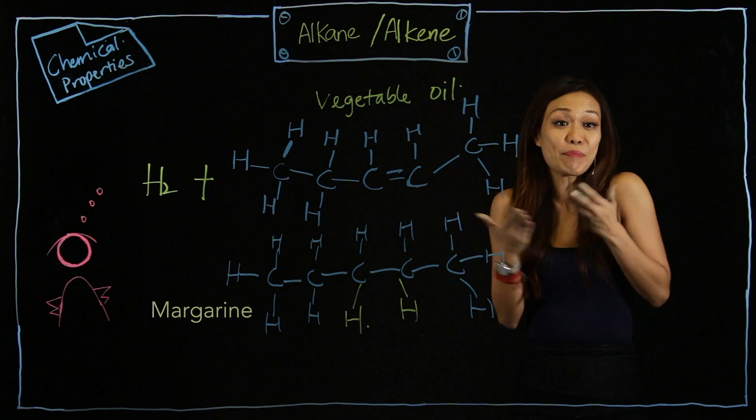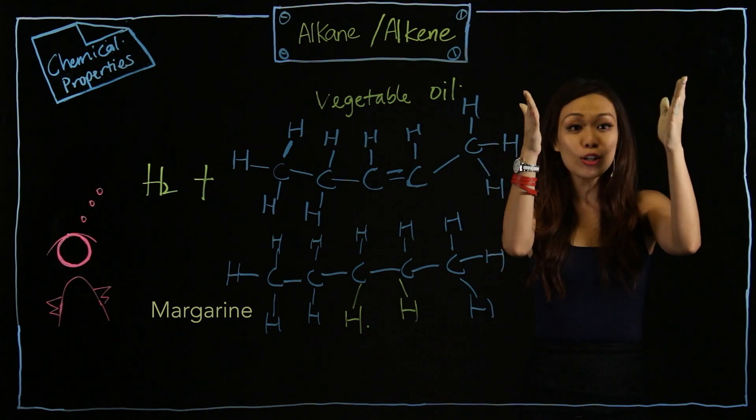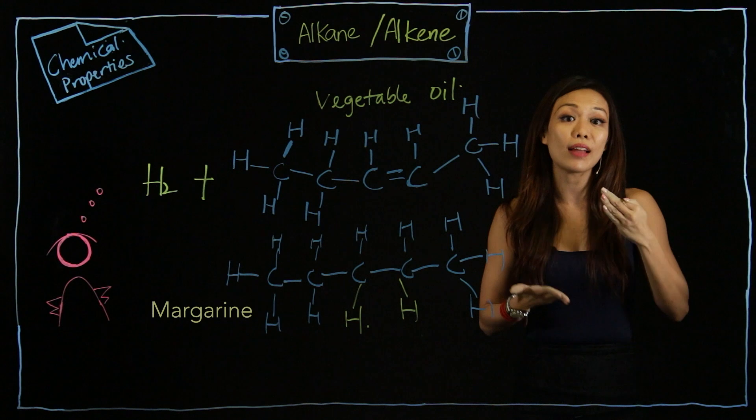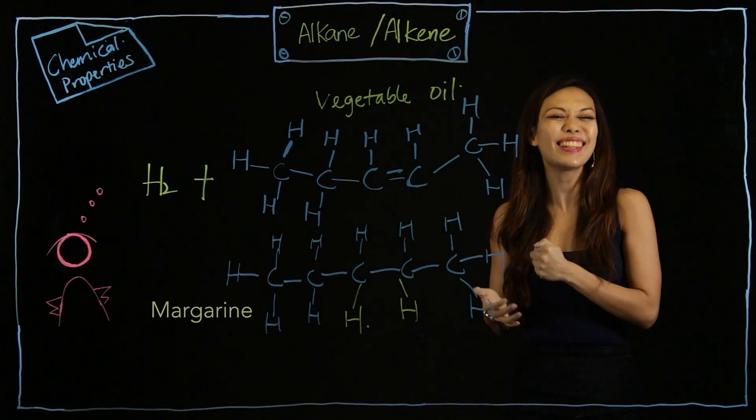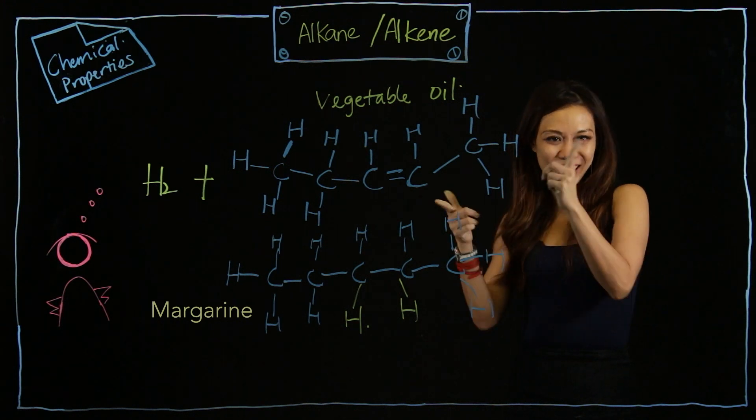Next time you eat potato chips, turn around, take a look at the ingredients. Look for saturated and unsaturated. Pick one with the least amount of saturated fats.